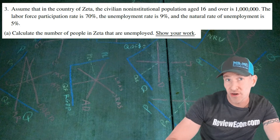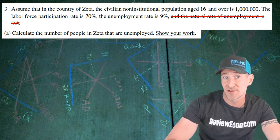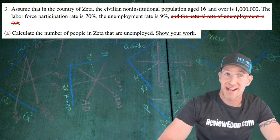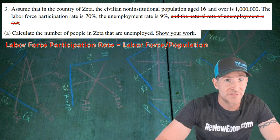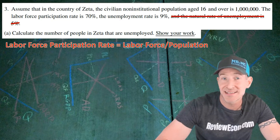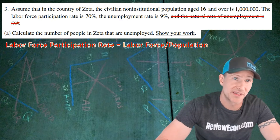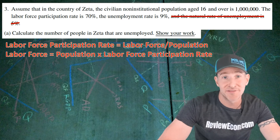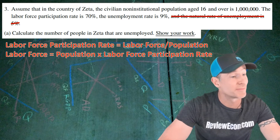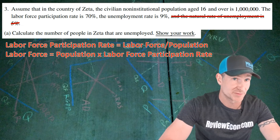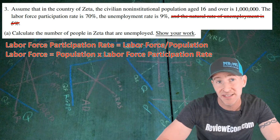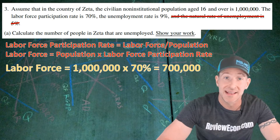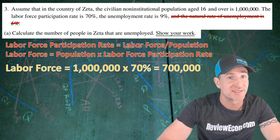The question is asking about the current unemployment, and that means the natural rate of unemployment is going to be irrelevant for this part. To answer this, we have to remember the formula for the labor force participation rate is the labor force divided by the population. Using algebra to rearrange that formula, the labor force equals the population times the labor force participation rate — that is 1 million times 70%, giving us a labor force of 700,000 people.